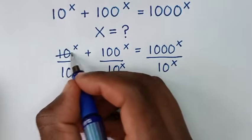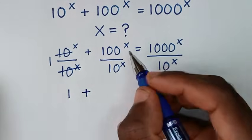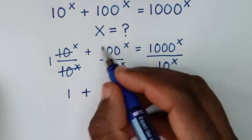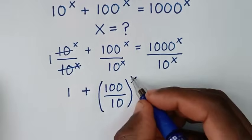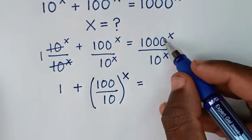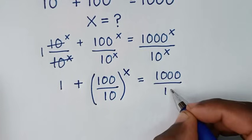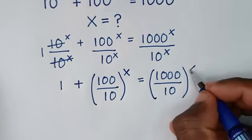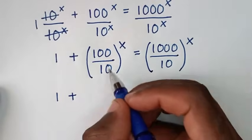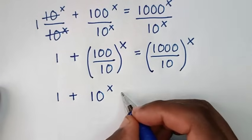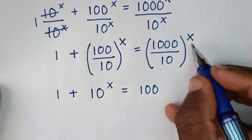From here, 10 power of x divided by 10 power of x is 1. Then 100 over 10, bracket, same power of x; and 1000 over 10, bracket, same power of x. So it becomes 1 plus 10 power of x is equal to 100 power of x.